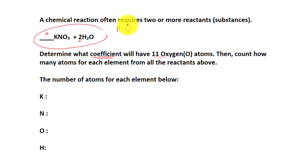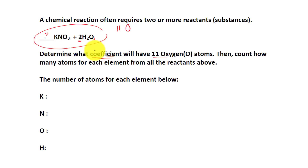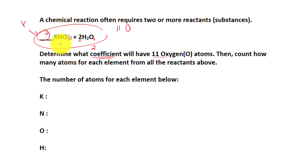Once you determine the coefficient, you are going to count how many atoms for each element from all the reactants above. We are going to focus on oxygen. Water right here has coefficient 2 — 2 times 1 gives us 2 oxygen. Then over here, we have 3 oxygen. So the question mark can be represented by the letter x, making this 3x right there.